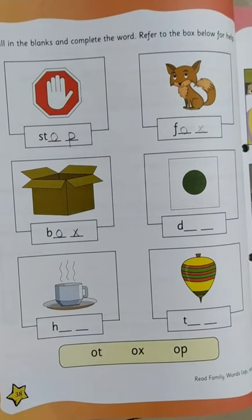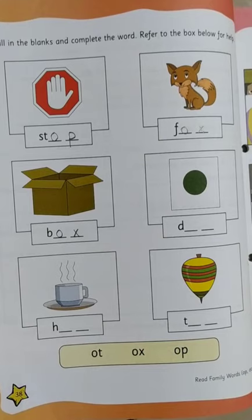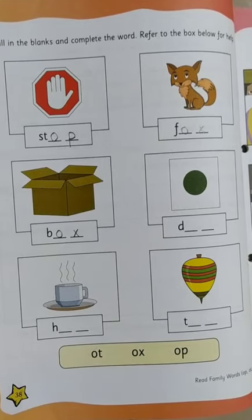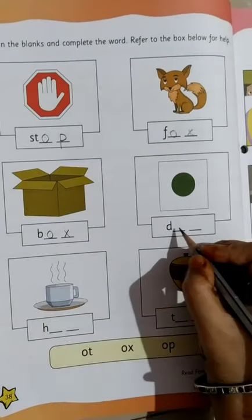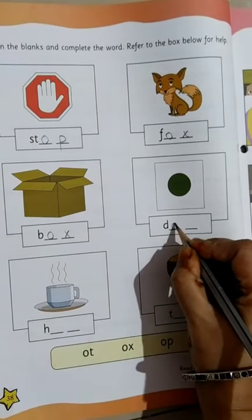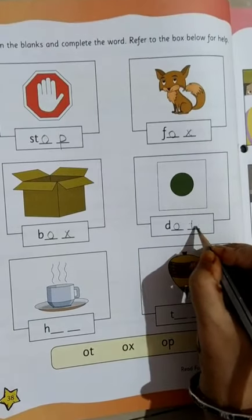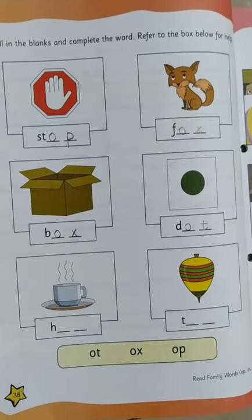Moving on to the fourth picture. Can you see a green dot? D is written, and then we have to write ot. So it will be dot. We write O and T. Dot.